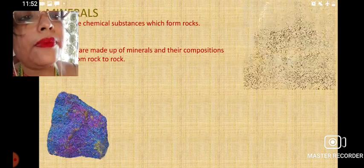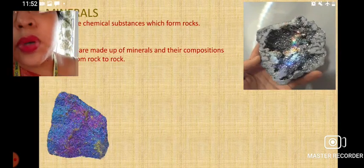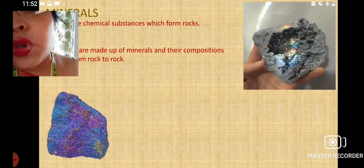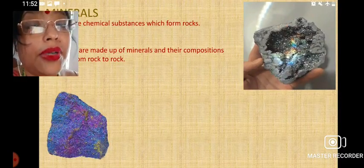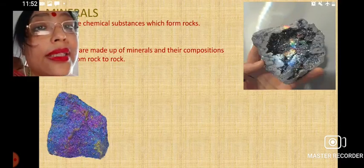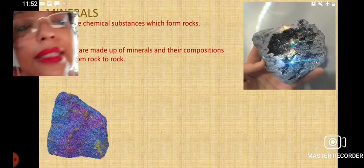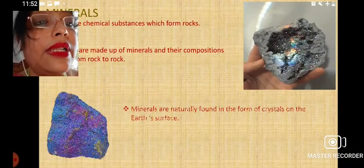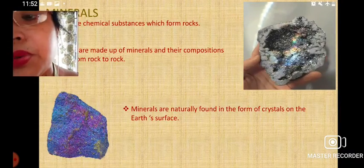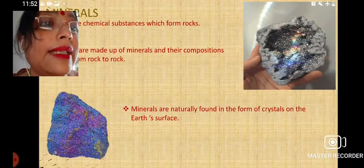Some of the important minerals are quartz, feldspar, and mica. Apart from these there are lots and lots of minerals. You can also extract metals from some of the minerals, and in this case those minerals are called metallic minerals.